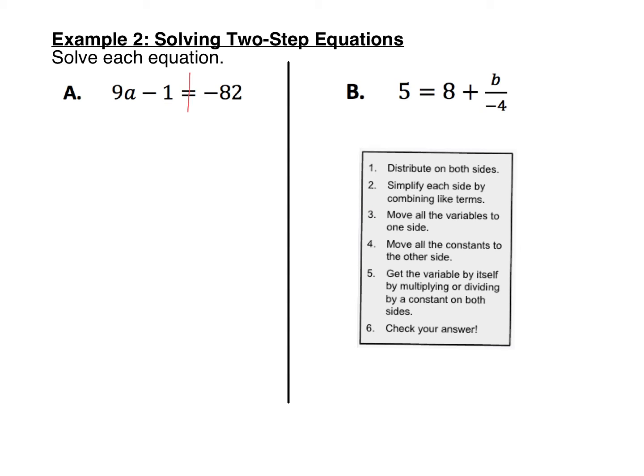Here we can see that there are no like terms. Over here, 9a and negative one can't go together. One is a variable, one is a constant. Moving all the variables to one side, well, that's already done too. The a's are all on the left, so we are ready to go to step four, which is move all the constants to the other side.